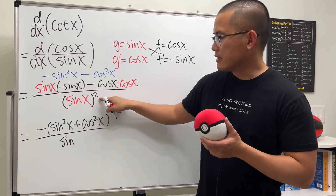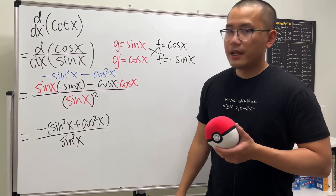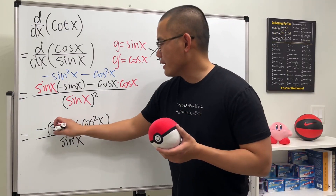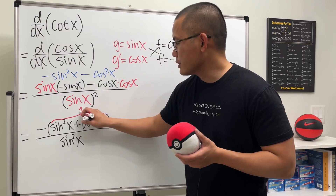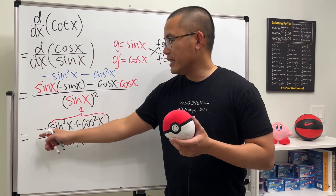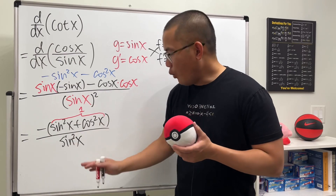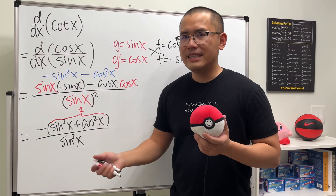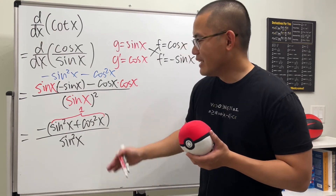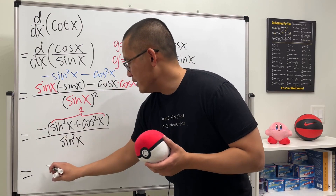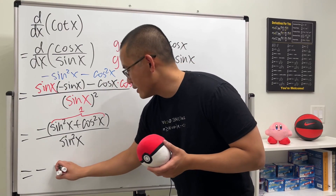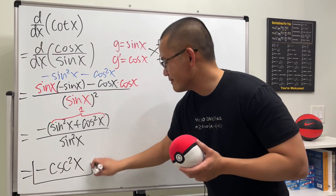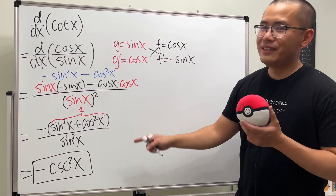Sine x squared is the same as if you put a 2 right here. And ladies and gentlemen, what's this? This is the famous Pythagorean identity, because sine squared x plus cosine squared x is just nicely equal to 1. So in fact, we have just negative 1 on the top over sine squared x. And we know 1 over sine is cosecant, and 1 over sine squared is just cosecant squared. So all in all, this right here will give us negative cosecant squared x. And that's the derivative for cot x.